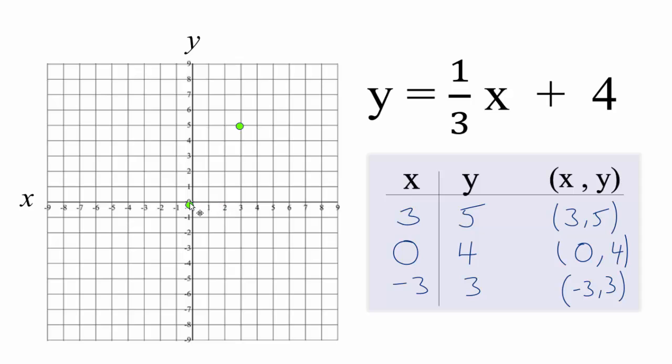X is zero, y is four. Here's our next point. And our third point, we have negative three for x, and then three for y, right there.